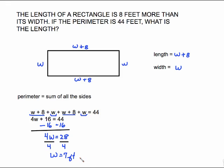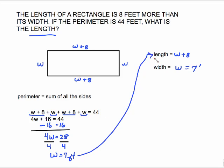Be careful — you're not finished. W equals 7 feet means the width is 7 feet, but what was asked for was the length. Plug that in: if W is 7, then 7 plus 8 is 15 feet. You can check this by adding all sides: 7 plus 15 plus 7 plus 15 — that gives you 44, so it checks out.